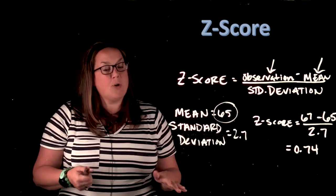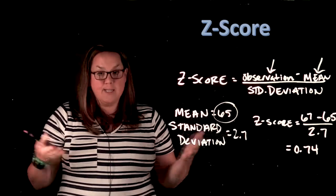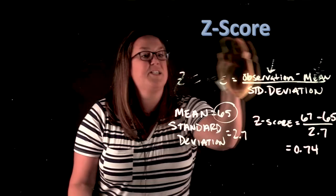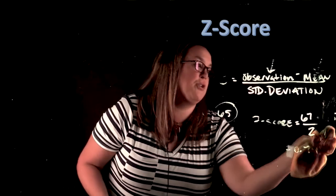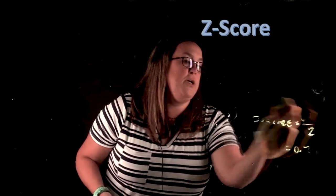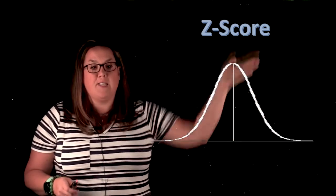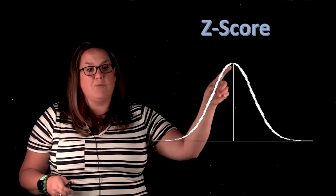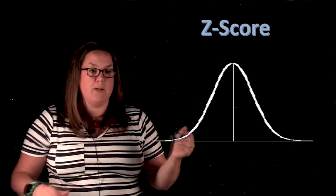So a z-score measures distance, direction from the mean in standard deviations. So if we go on the next icon or our curve, we can show you where those z-scores would be located on the curve. So here's our curve. Remember, that's that normal distribution because it's bell-shaped, it's unimodal, it has one peak, it's symmetric,